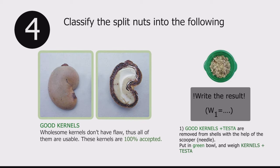Next, we need to determine the quantities of usable nuts and that of defective nuts. Good canals should be separated from the shell and put into the green bowl. We call this weight W1.